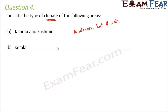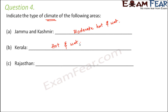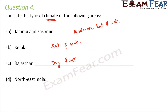Kerala has a lot of rainfall during the rainy season and the heat is also quite significant, so it is hot and wet. Rajasthan is definitely going to be dry because there is not much rainfall, and it is hot because temperatures really go quite high.